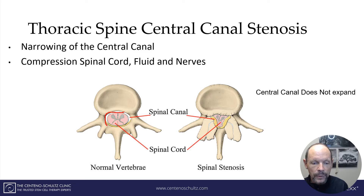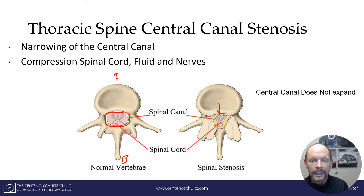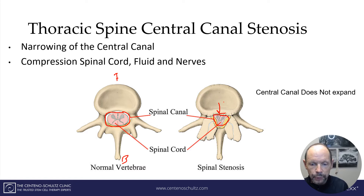Here is the bony column — this is the thoracic spine, this is the front, and this is the back. You can see when this gets narrowed, as it is here, the canal gets very tight. And this bony area cannot expand, so if there's something pushing inward, it causes stenosis.